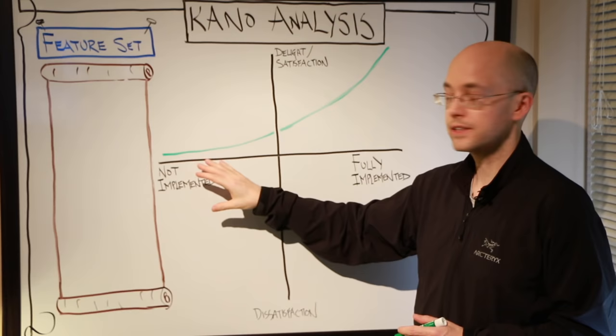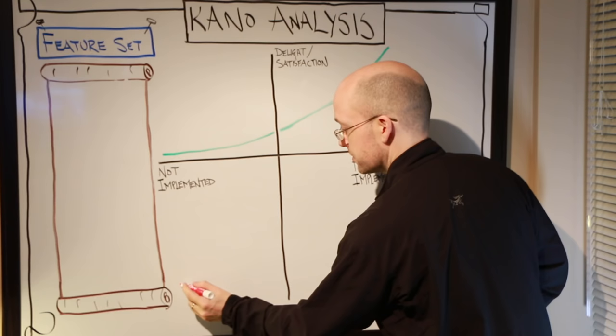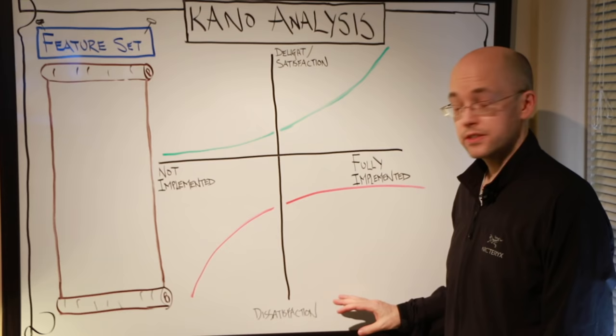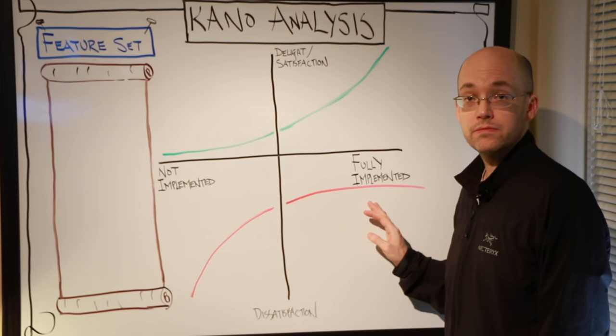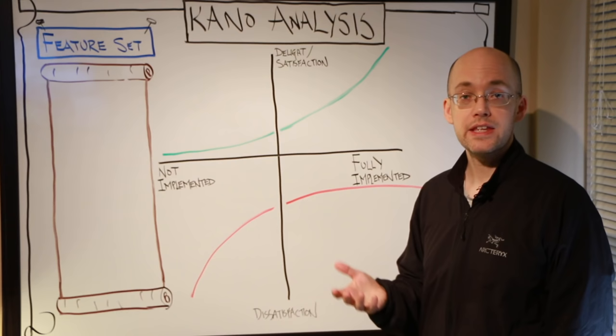However, we might find that as we implement a specific feature, we gain satisfaction for that feature. Now on the flip side, we'll draw another line here where we have a dissatisfaction that may occur if we don't have a fully implemented feature. These could be potential regulation requirements that we need to have in the item, or that it is such a basic thing that we need to have in the item that it has to be fully implemented.